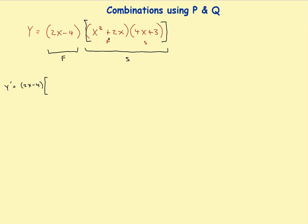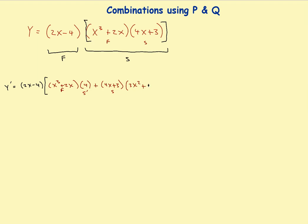Just completely forget about this problem and focus on this part right here — pretend this is a brand new problem. So just looking at these two, I've got a first and a second. It is the original first, so x cubed plus 2x, that's the first times the derivative of the second. Take the derivative of this one, which is 4. So there's the derivative of the second, then plus the original second times the derivative of the first, which would be 3x squared plus 2. Then I'll put brackets around that — that's going to be the derivative of the first.